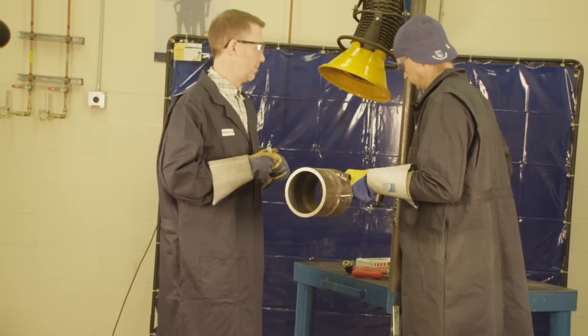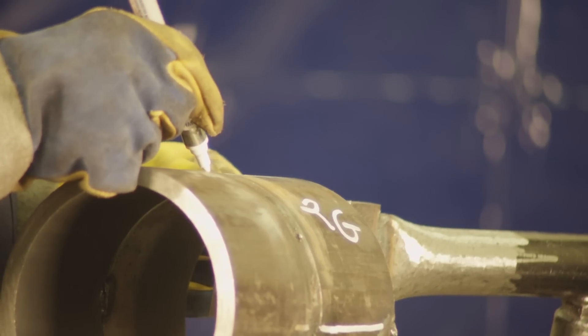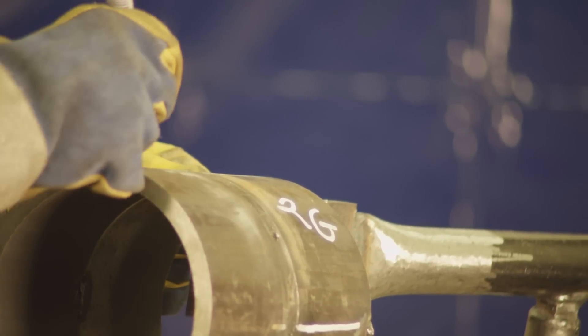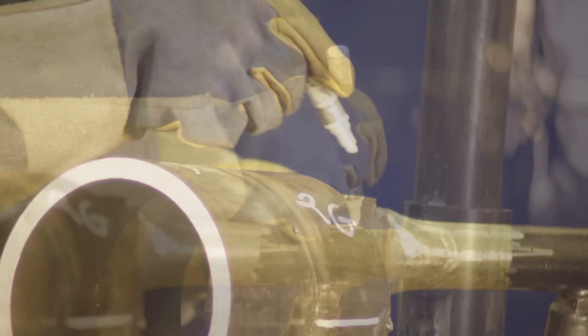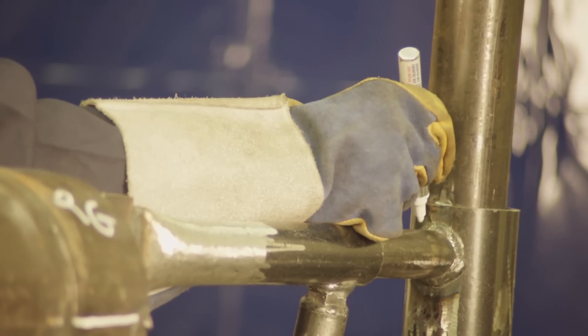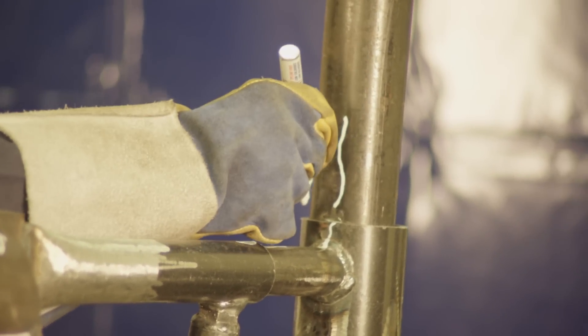Once the coupons have been tacked, the position and height must be verified and marked by the safety code's officer. The coupons must remain in the 5G position for the rest of the welding.